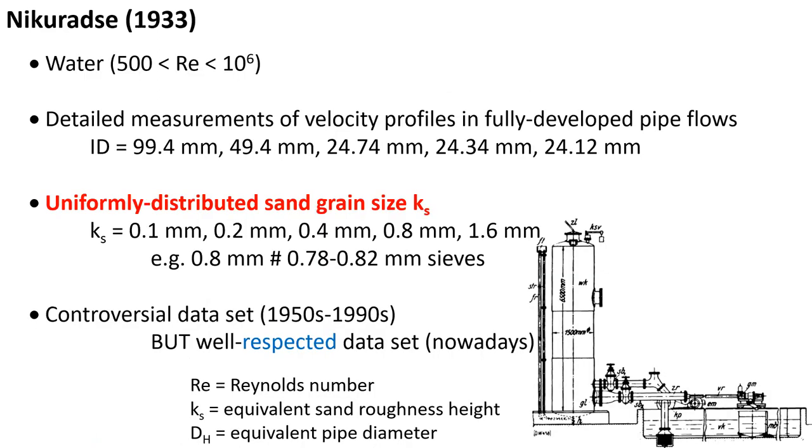The experiments were performed with water in fully developed pipe flow with internal diameter between 24 to 99 mm, using uniformly distributed sand grain sizes between 0.1 mm to 1.6 mm. This data set was controversial in the 1950s to 1990s, but today is very well respected.